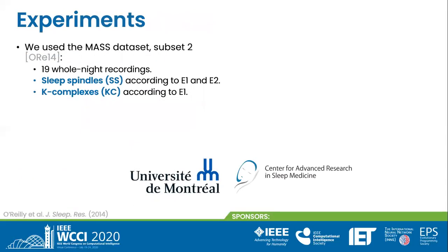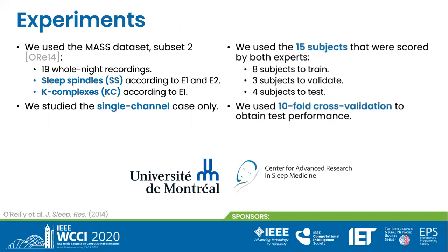For our experiments, we used the second subset of the MASS dataset, which consists of 19 whole-night recordings from different subjects. Here, sleep spindles were scored according to experts 1 and 2, and K-complexes were scored according to expert 1. Therefore, we have 3 detection tests. We studied the single-channel case only, using as input the annotated EEG signal. Additionally, we used only the 15 subjects scored by both experts, leaving 8 subjects to train, 3 subjects to validate, and 4 subjects to test, using 10-fold cross-validation.